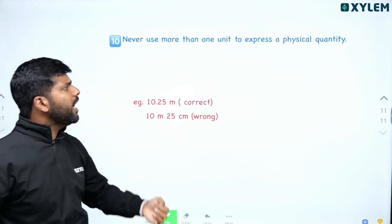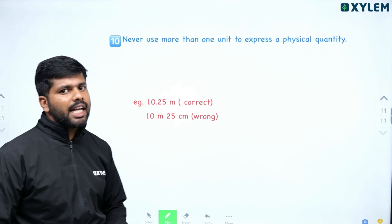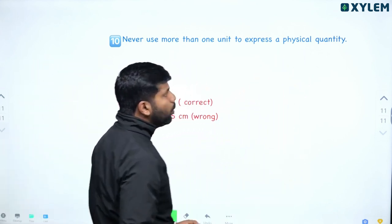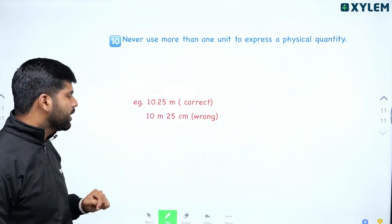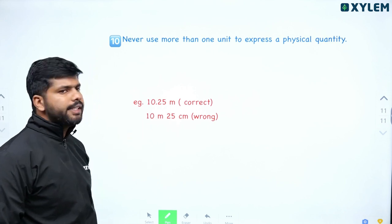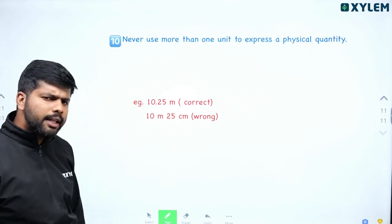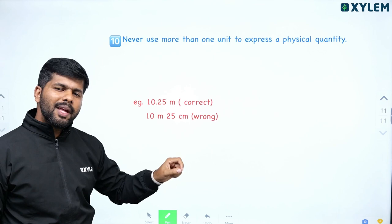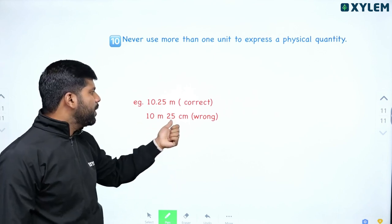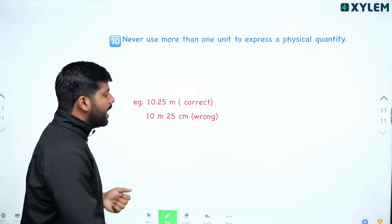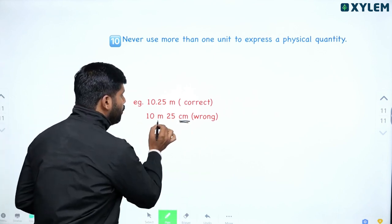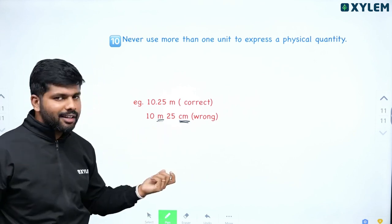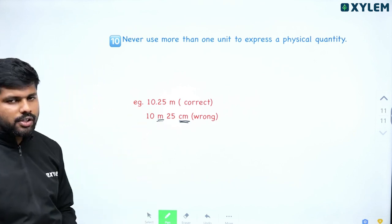Never use more than one unit to express a single physical quantity. Express one physical quantity with one unit only — using more than one creates confusion. For example, instead of writing '10 meters 25 centimeters', you should write it as '10.25 meters' or '1025 centimeters'. Using two units together is wrong.